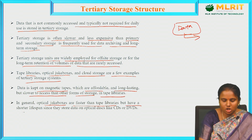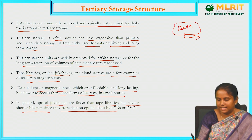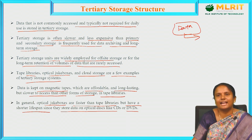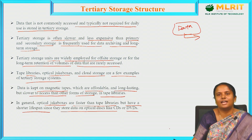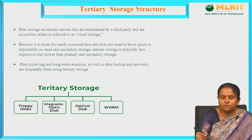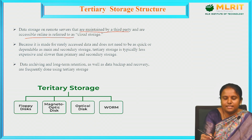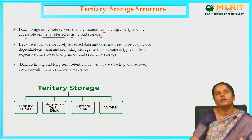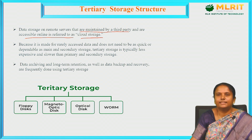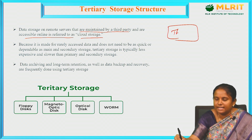Optical jukeboxes have a shorter lifespan since they store data on optical disks like CDs and DVDs. When using CDs or DVDs, the lifespan is very short due to potential errors or buffering. Cloud storage refers to data stored on remote servers maintained by a third party and accessible through the internet.